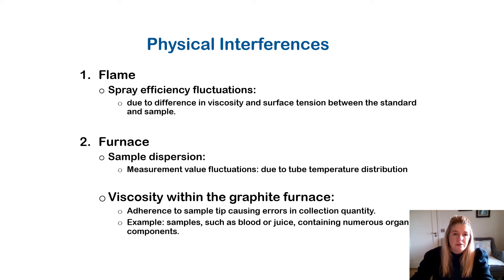Physical interference occurs when you are using a flame and the spray efficiency is fluctuating into the flame. This might be due to differences in viscosity and surface tension between the standard and the sample. If you're using a furnace, such as the graphite furnace discussed in Part 1, the sample dispersion may affect the measurement. The measurement value fluctuates due to sample dispersion, which could be due to the tube temperature distribution.